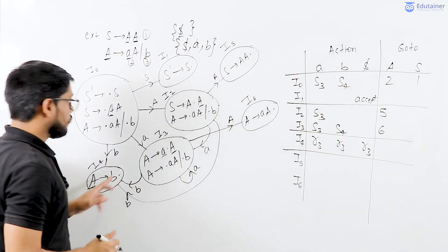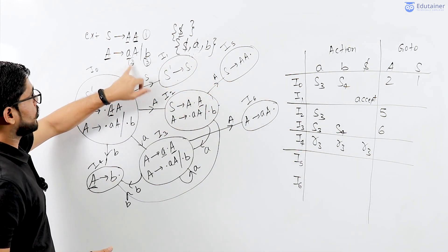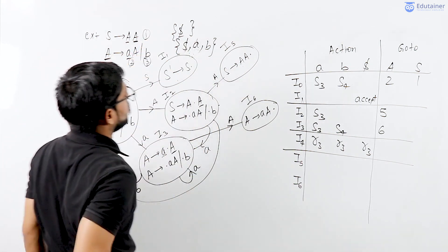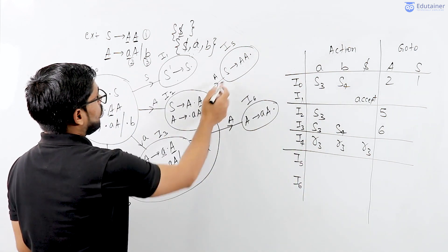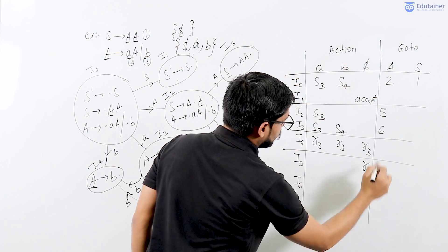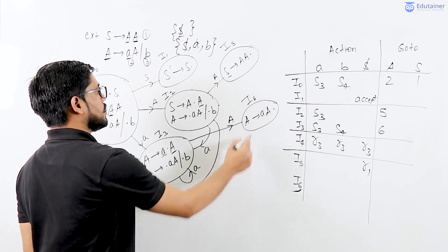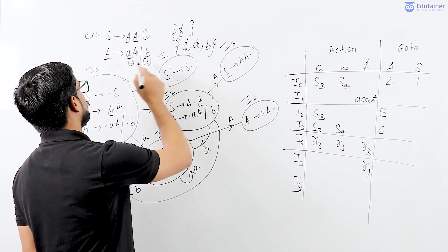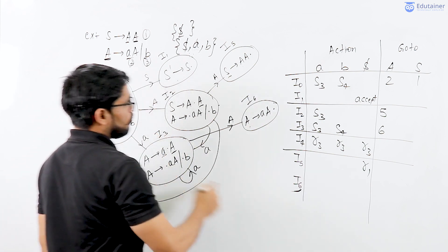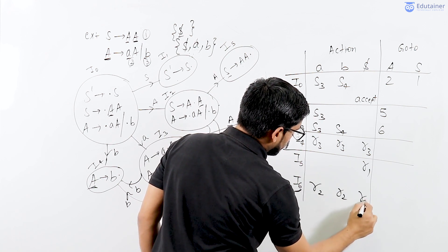Now I5 corresponds to production number 1. It is a final item and it corresponds to production number 1. Production number 1 is placed in the follow of S — follow of S is dollar. So R1 is placed in the dollar column. I6 is production number 2, meaning R2. R2 is placed in the follow of A — follow of A is a, b, and dollar — so R2, R2, R2, and R2.